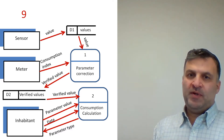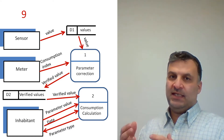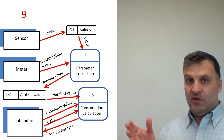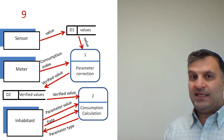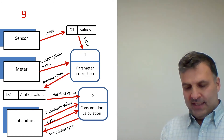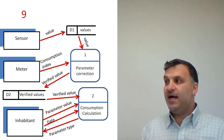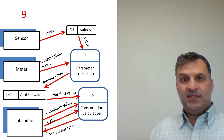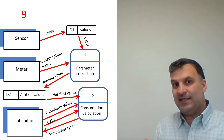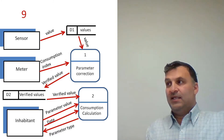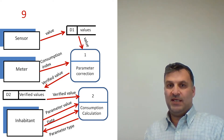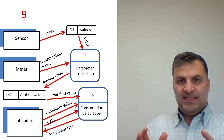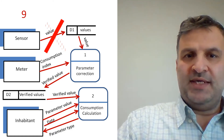So we solve the problem by replacing the sensor with a data store. But what is the problem now? We have the same type of problem again, because we cannot communicate directly with a data store. Data stores are used only by the processes of the system — we should open and close these data stores through processes. An external entity cannot communicate directly with a data store; that is the mistake here.